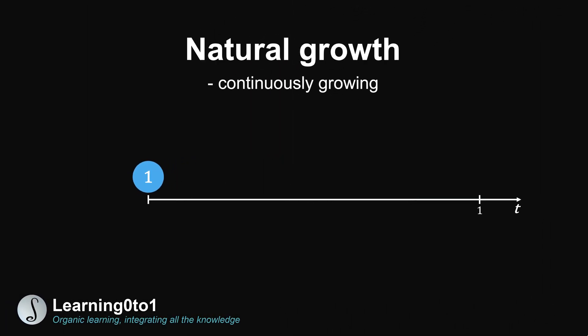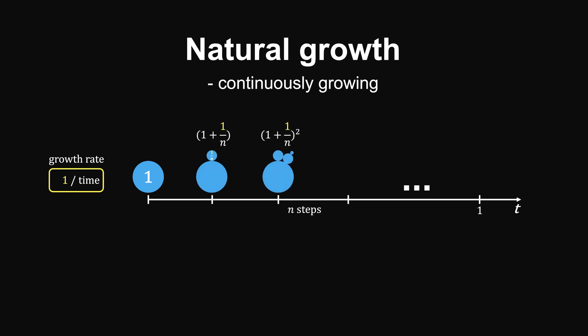In our previous videos, we've talked about the meaning of natural growth. For one unit growth rate, we consider n steps of growth. Each increases by 1 over n until the final term.